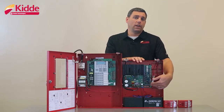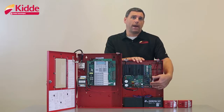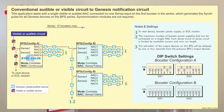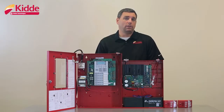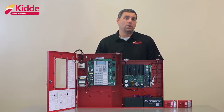Next configure your switches on the booster panel as shown here. To configure all four NAC circuits on the booster you will place switches 1-6, 1-8, 2-2, 2-4, and 2-5 in the on position. This will configure the booster panel NAC circuits as continuous and will generate the sync pulse for the Genesis horn strobes. This configuration will provide strobe synchronization without the need to use an external sync module.